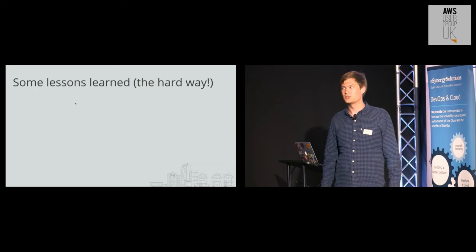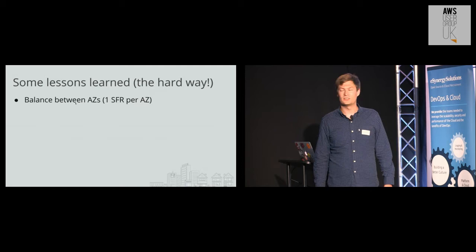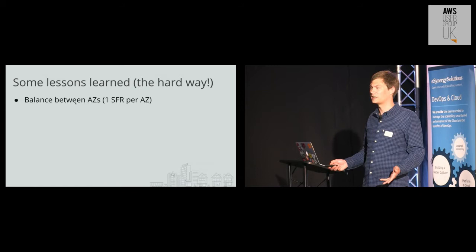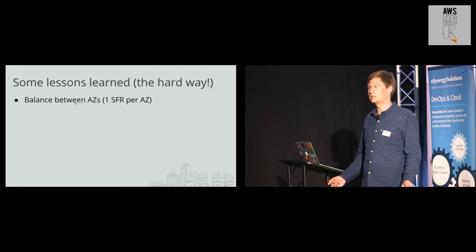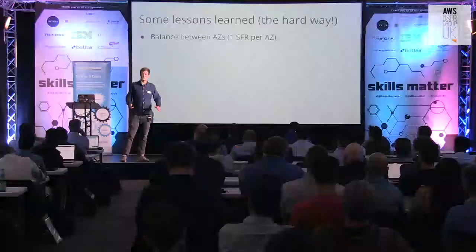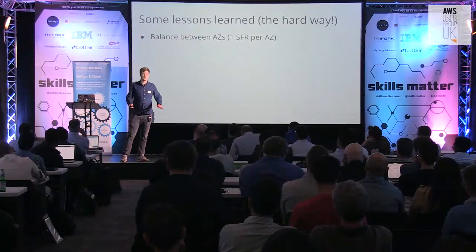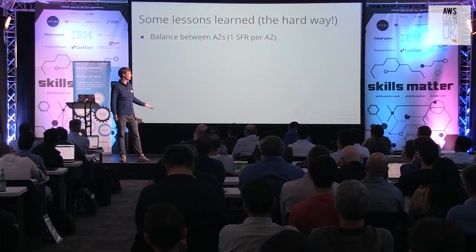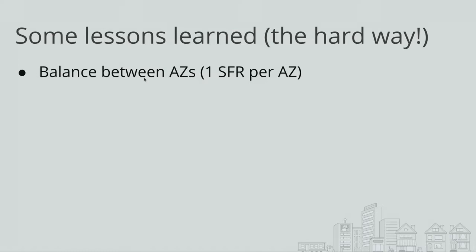Now for the lessons learned — this is the slide to pay attention to if you're thinking about doing this. The first one is balancing between AZs. If you use ASGs, you're probably familiar with automatic AZ balancing. It's totally important to us — we want to balance so that if we lose an AZ, we only lose a third of capacity rather than half. We also have databases and statically provisioned resources that could get overwhelmed if everything suddenly migrated to one AZ. But Spot Fleets don't give you this for free. The solution is a bit hacky but simple: just run multiple Spot Fleets, one per AZ.